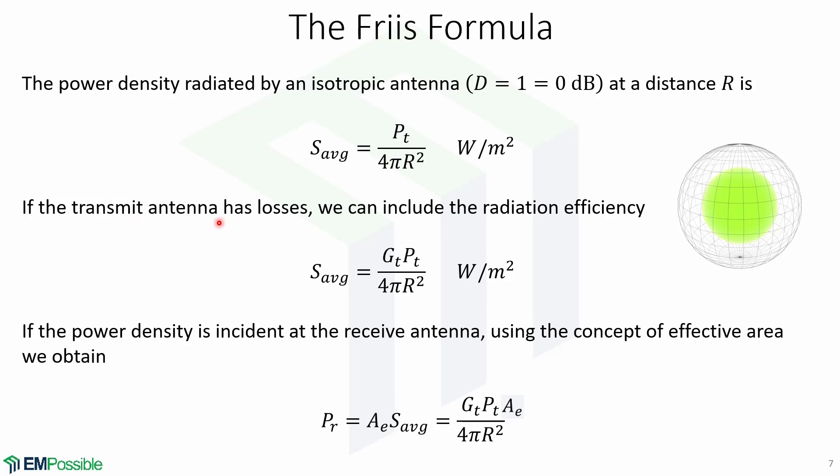If the transmit antenna also has losses, we can include the radiation efficiency given by GT, and so the formula is changed to this.